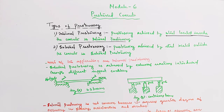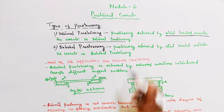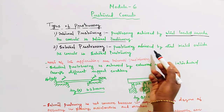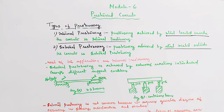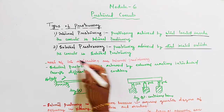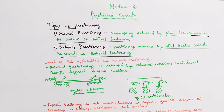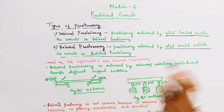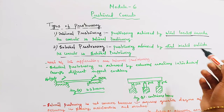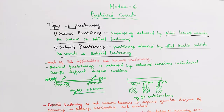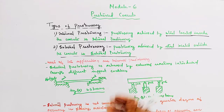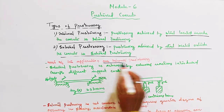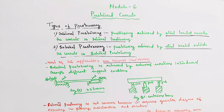Steel located inside the concrete is Internal Pre-Stressing. External Pre-Stressing is achieved by steel located outside the concrete. So we have two pre-stressing types. The most common is Internal Pre-Stressing.